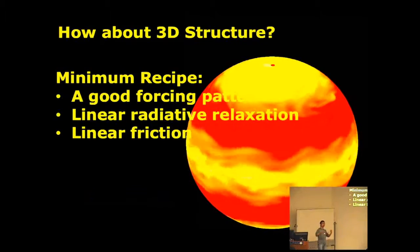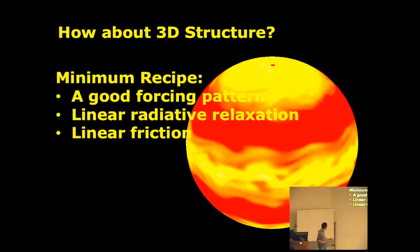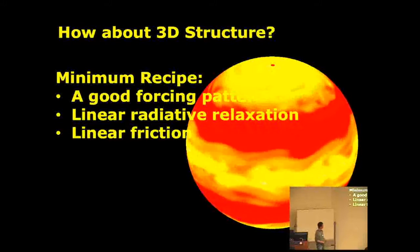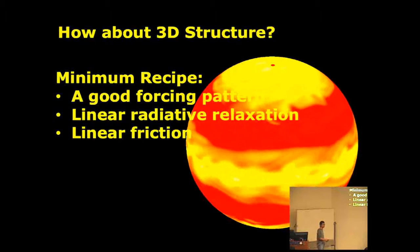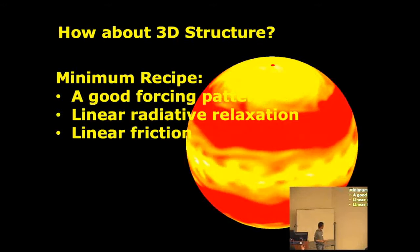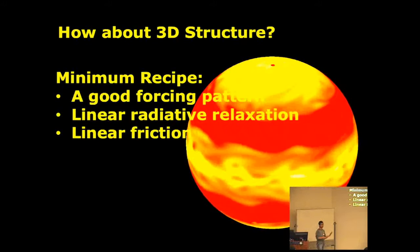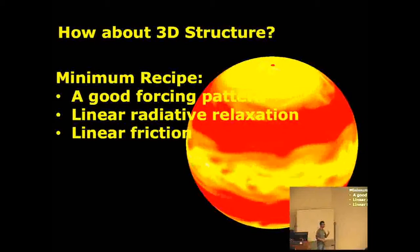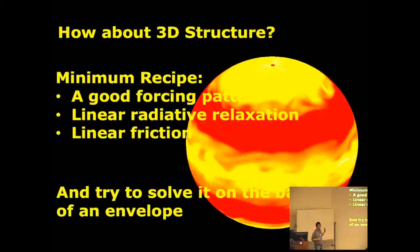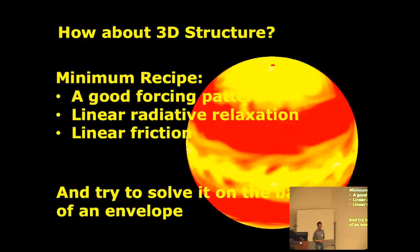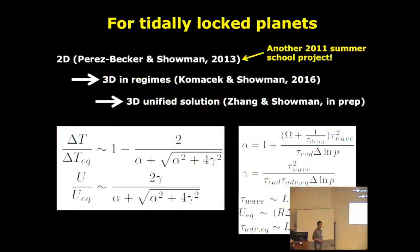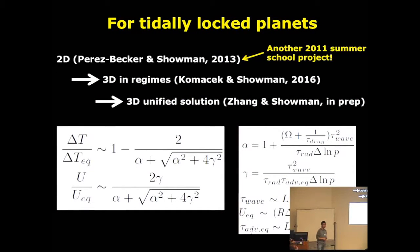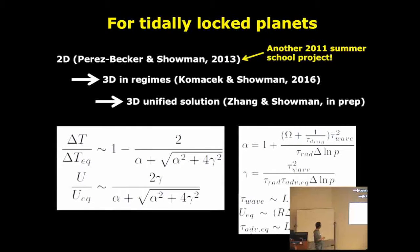As Laura just mentioned, we have 3D stuff now. So we have to think about 3D. What is the minimum recipe for 3D atmosphere? I have to think about it. First, we need a good forcing pattern, not too complicated. If you put clouds everywhere, it's complicated. You have linear radiative relaxation, put a linear friction. Very simple. Can we still understand the problem? For tidally locked planets, can we understand this? And can we solve it on the back of an envelope? Actually, sounds like a mission impossible. It took almost several years in the Schumann group to develop this framework. First, it was actually done by Dennis Prager, another 2011 summer school project. People derived this for a 2D system. And then Ted, sitting here, did it in different regimes. And finally we figured out maybe we can unify them together and achieve an analytic solution from first principles.